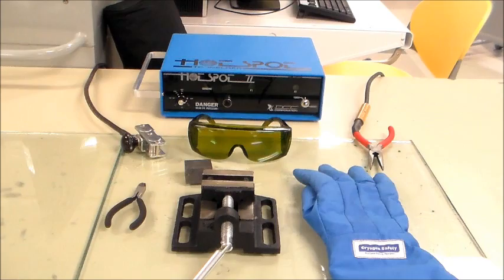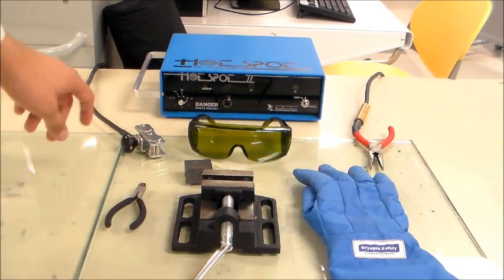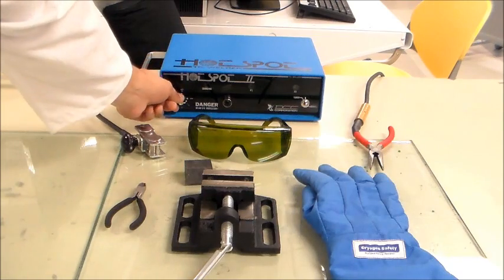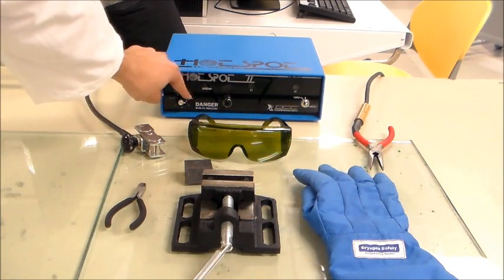Make sure that the welder is turned off by looking at the power knob and making sure that it is in the off position.